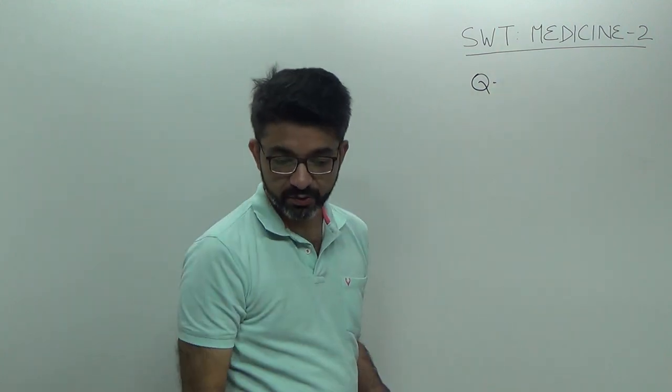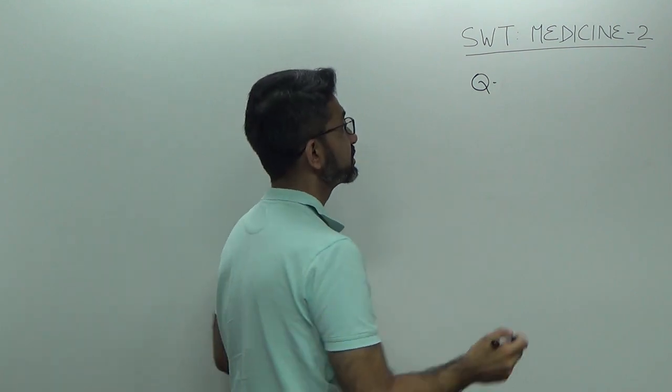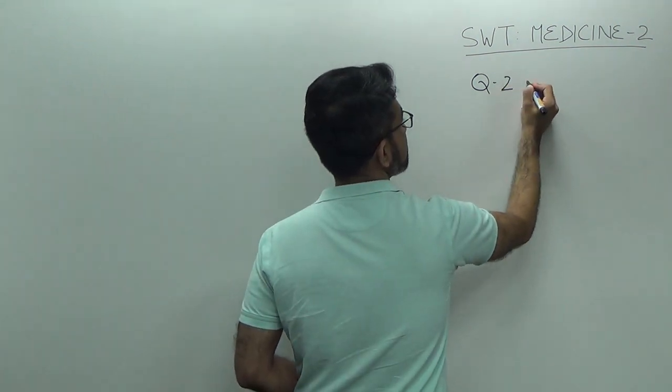Next question is question number 2, which is an immunological marker of type 1 diabetes. Answer is B.